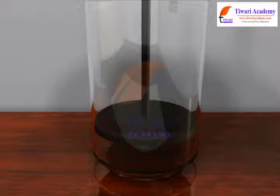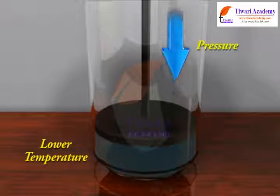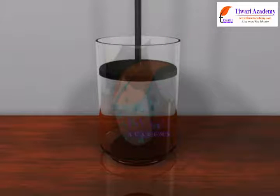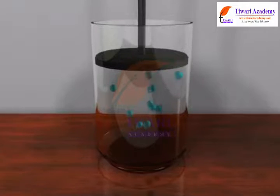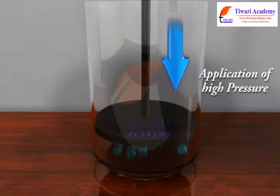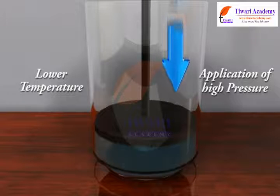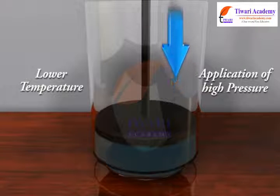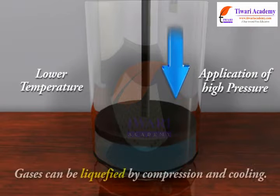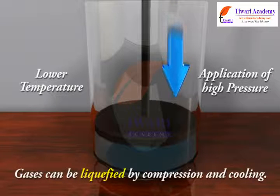Gases can be liquefied by applying pressure and lowering temperature. When a high pressure is applied to a gas, it gets compressed into a small volume, and when we also lower its temperature, it gets liquefied. So, we can also say that gases can be liquefied by compression and cooling. Thank you.